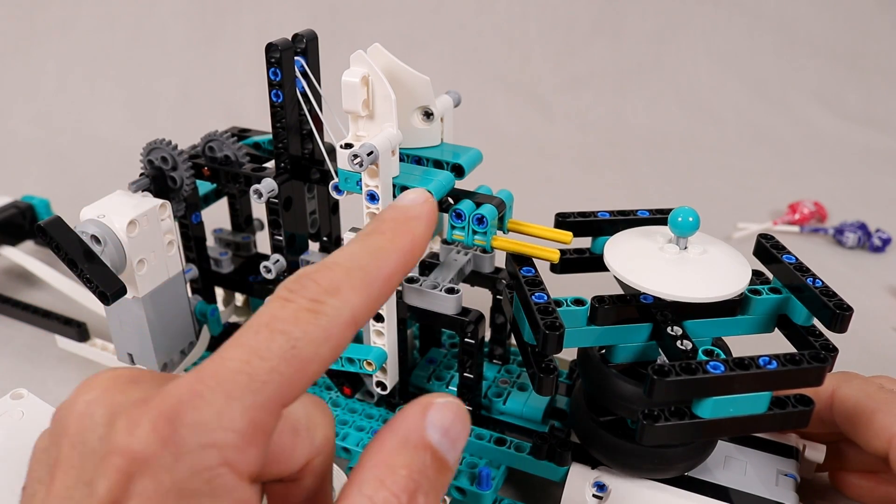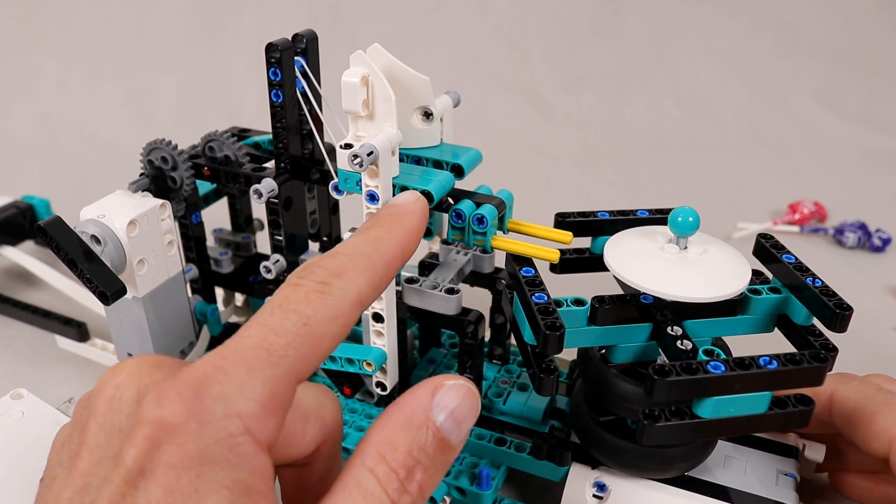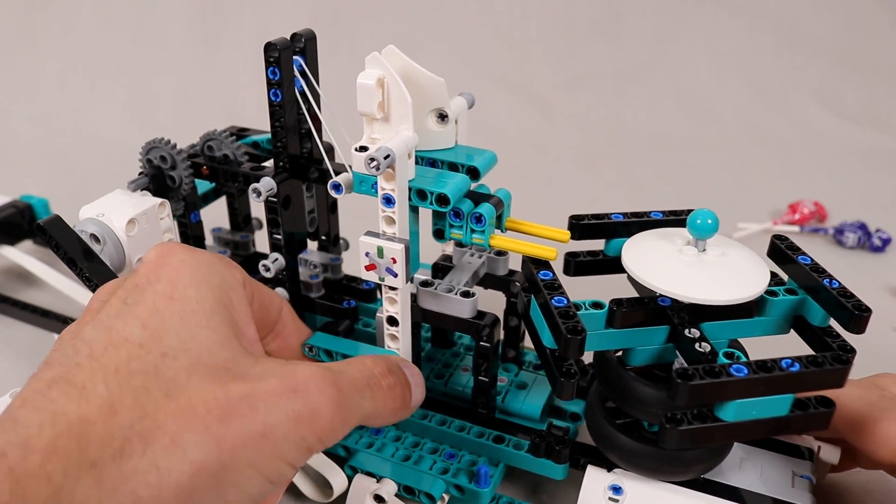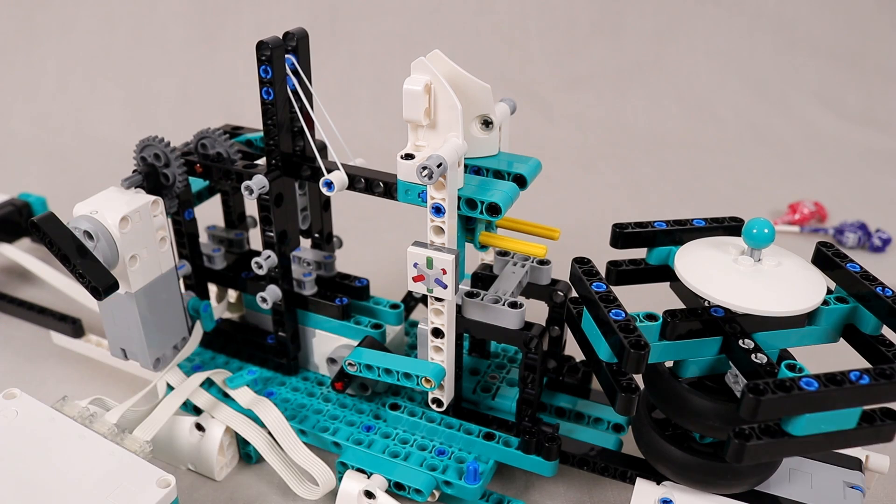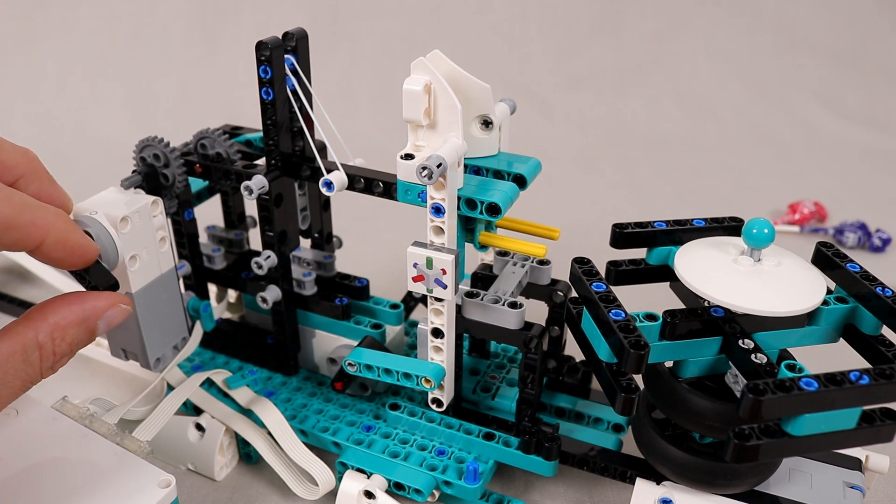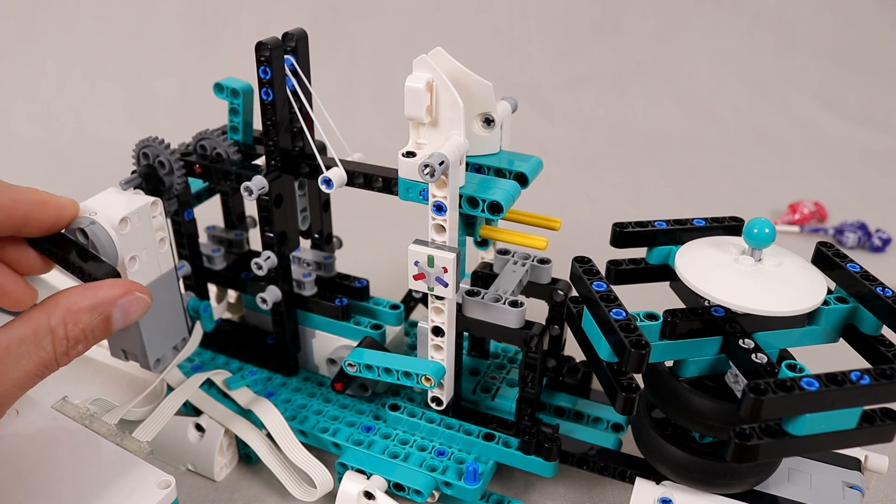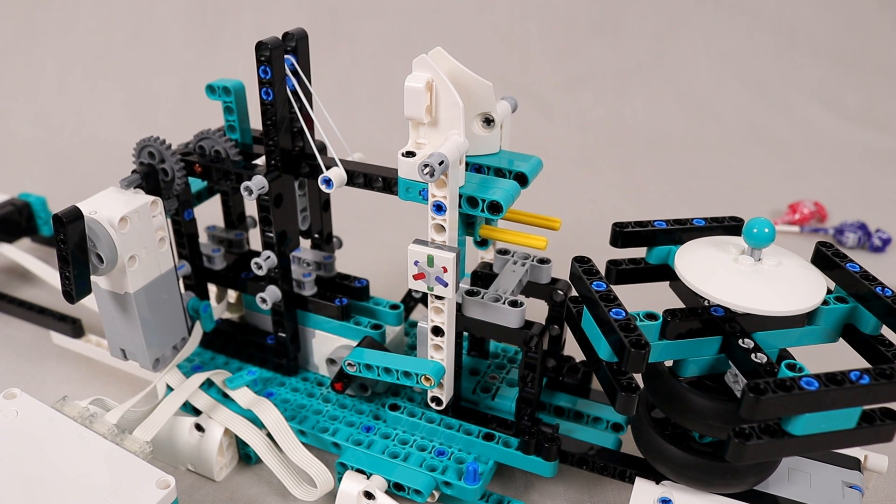The arm is then held in place by these constraints connected to the front of the supply, which can slide in and out of the model via this motor at the base. Once constrained, the priming lever can be retracted so that the catapult arm can launch freely when it is released.